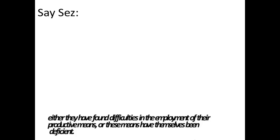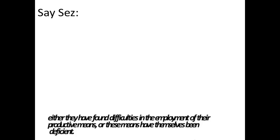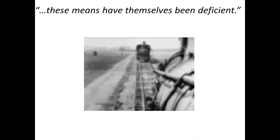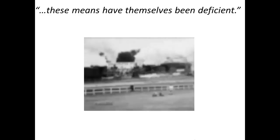I'm highlighting this last part of the passage because this is the crux of real business cycle thinking. Why is the productive capacity of the economy reduced? Why is business activity down? Why is it hard for businesses to sell their output, and therefore they reduce their demand for inputs, particularly labor, which is unemployment? Say says businesses have found difficulties in the employment of their productive means, or the means have themselves been deficient. What does that mean? It means something is going wrong with the land, labor, and capital in the economy.